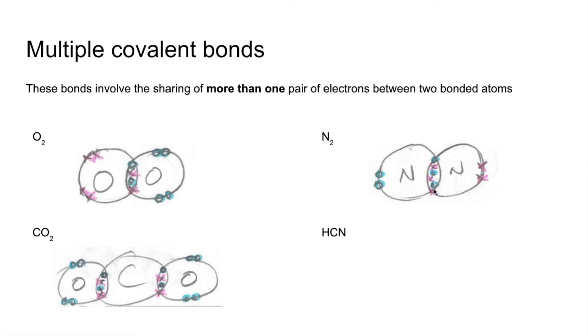And hydrogen cyanide, HCN, we've actually got a single covalent bond between the hydrogen and the carbon, but we've got a triple covalent bond between the carbon and the nitrogen.